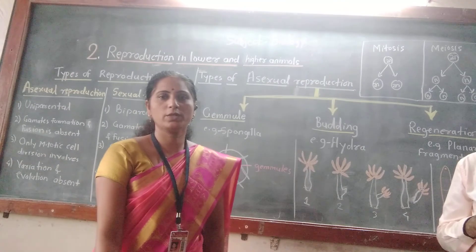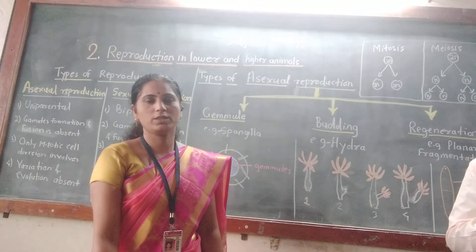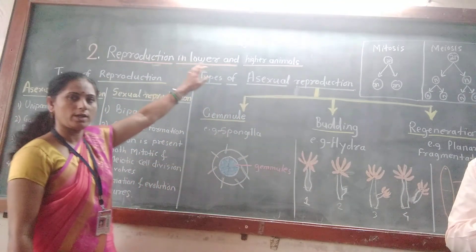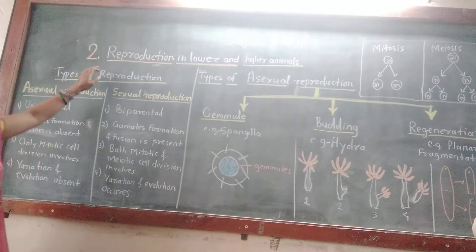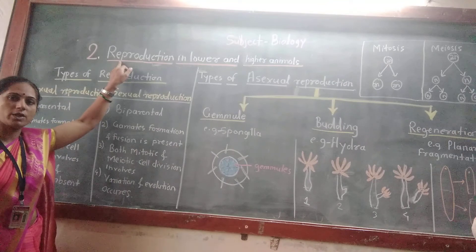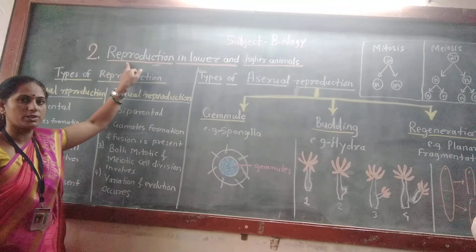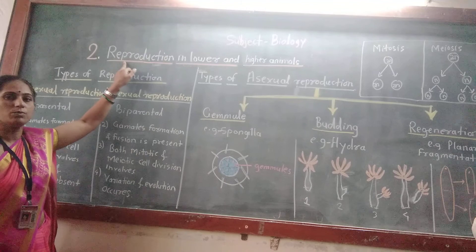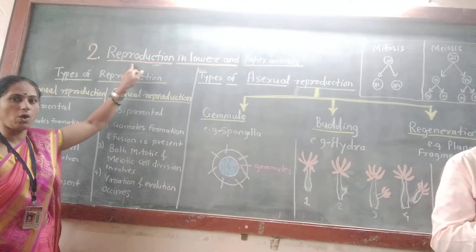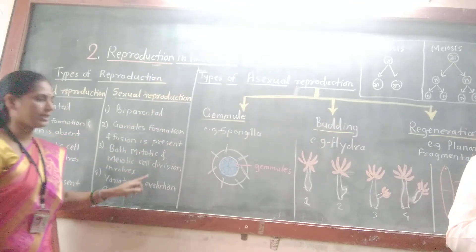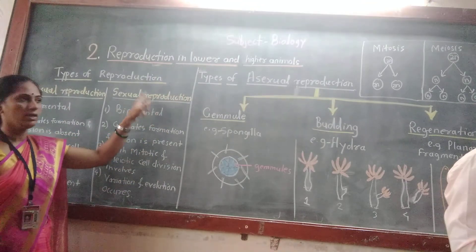Hello students, today we are going to study the second topic of biology: reproduction in lower and higher animals. Reproduction is a most important biological process by which an organism produces its own copy, having similar genetic makeup. Variation may be present in the next generation in case of sexual reproduction.